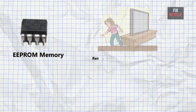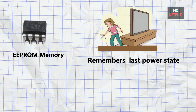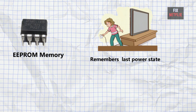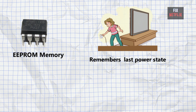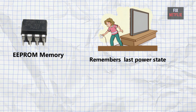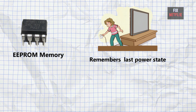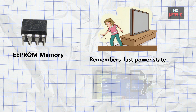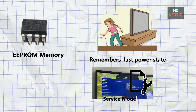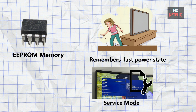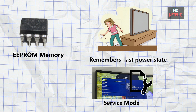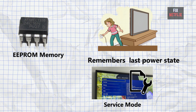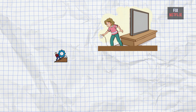Another important job: EEPROM remembers the last power state. If your TV was on before a power cut, it will turn back on when electricity returns. And lastly, if the EEPROM chip is faulty, you won't be able to access service mode or factory mode, which makes repairs and diagnostics much harder.